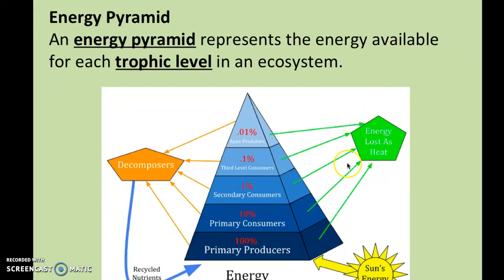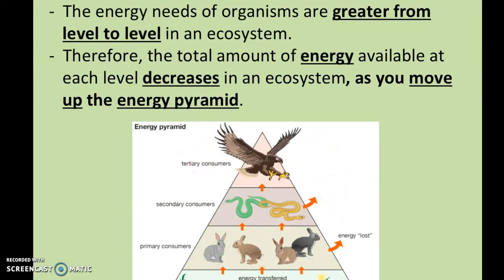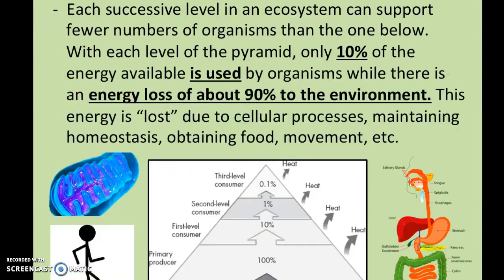Only 10% of the energy available at each level passes up to the next level. What happens to the other 90%? It gets lost — consumed, used for digesting food, moving, running, thinking, hunting food, doing everything you need to do every day. The energy needs of organisms are greater from one level to the next. This hawk or bird of prey at the top needs the most amount of energy, so it has to consume a lot more than the rabbits lower down in order to meet its daily energy needs.